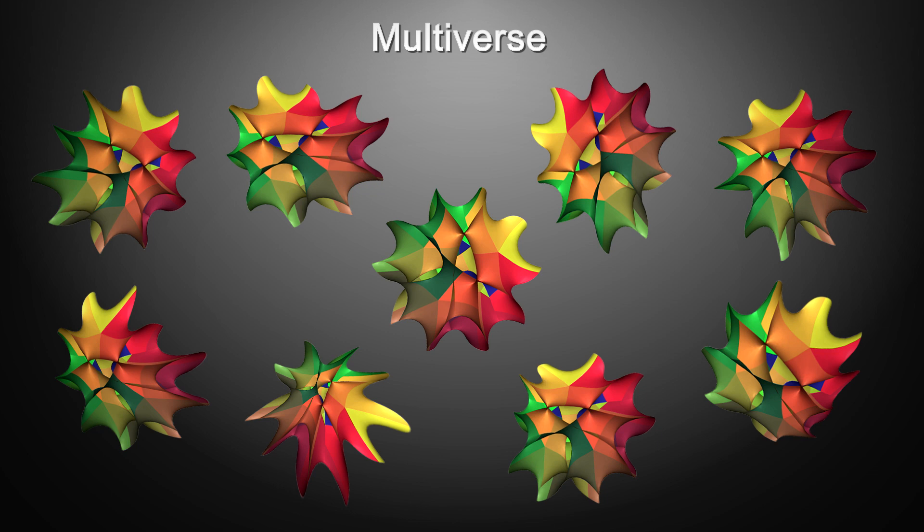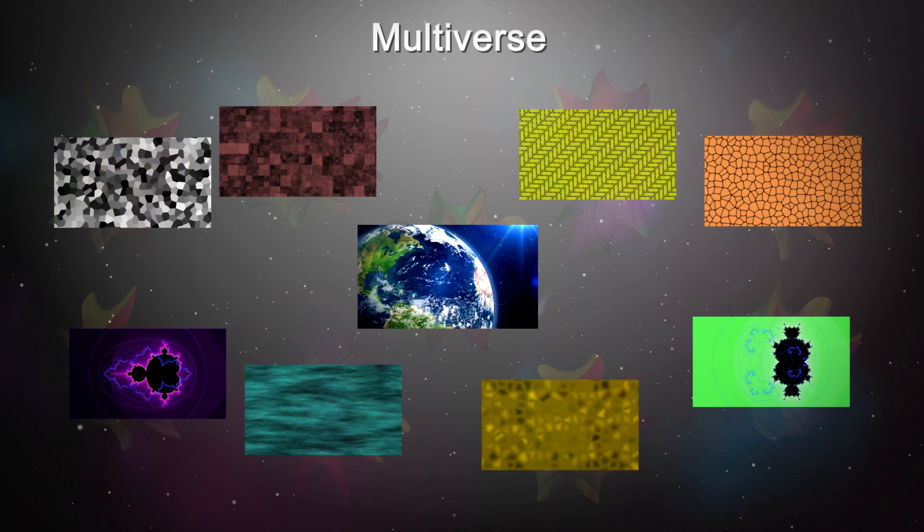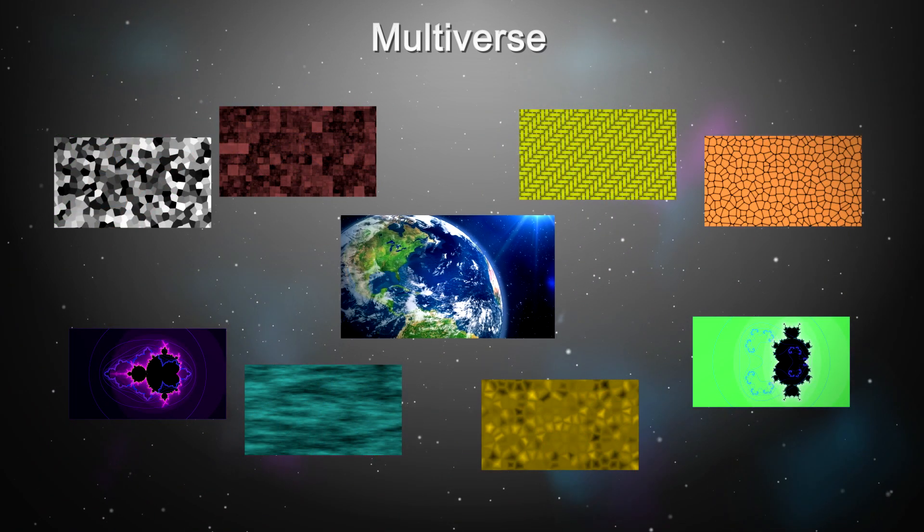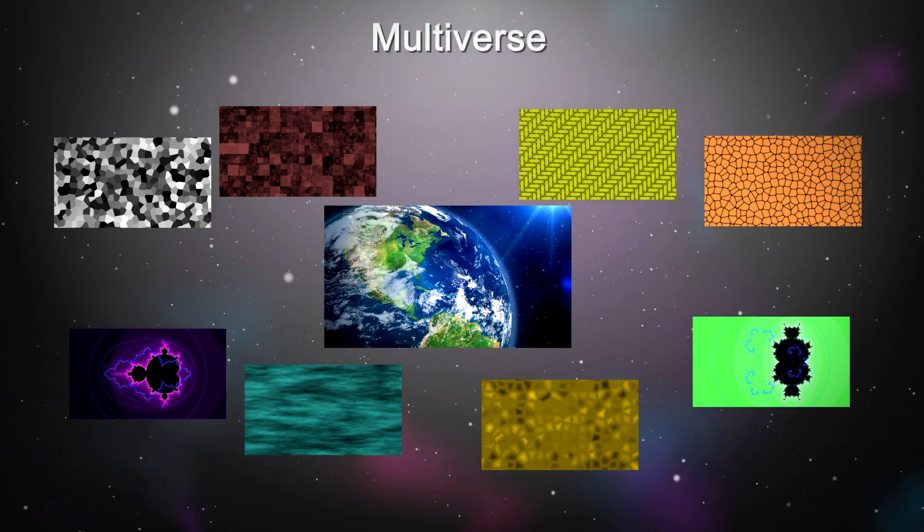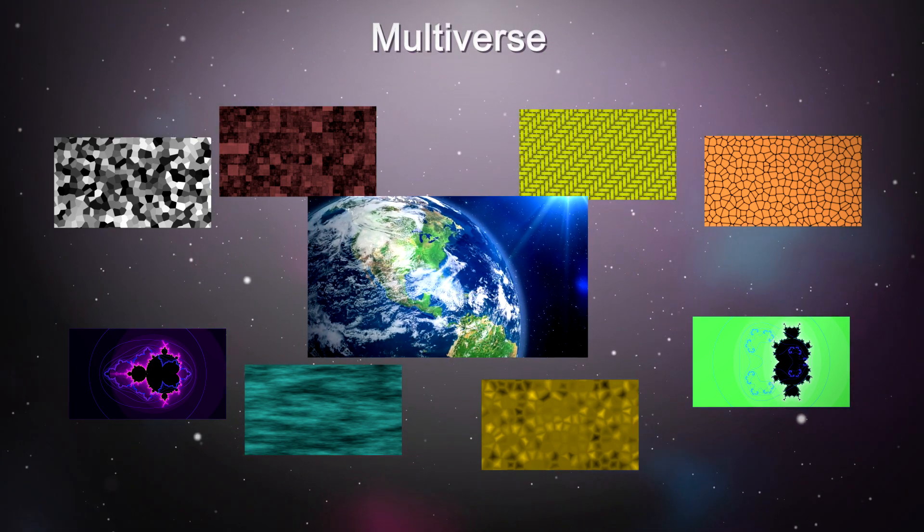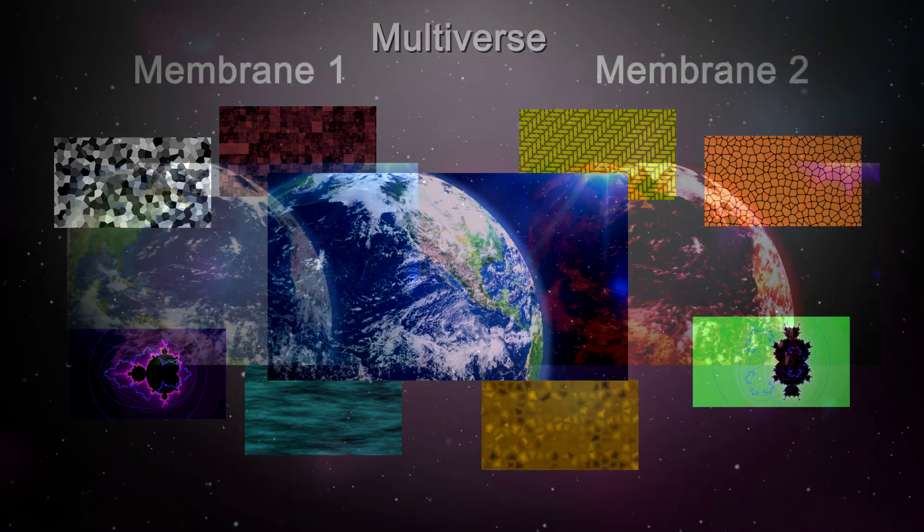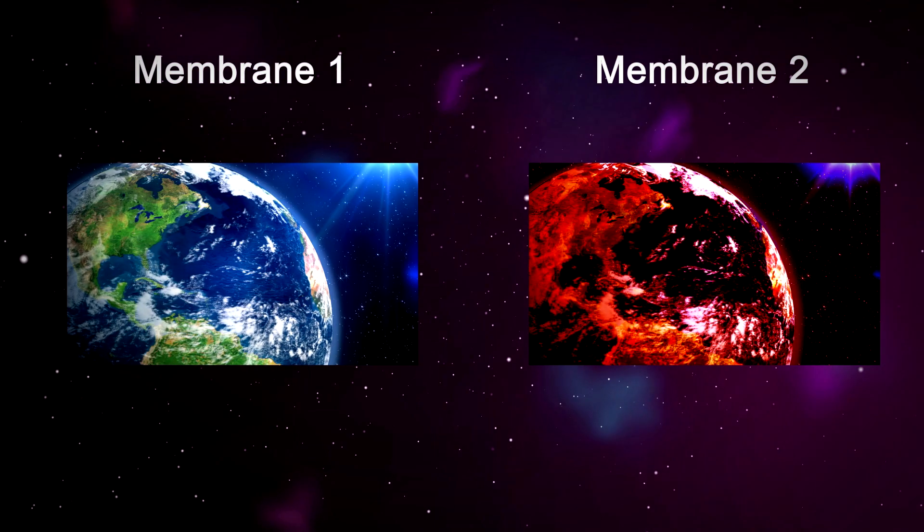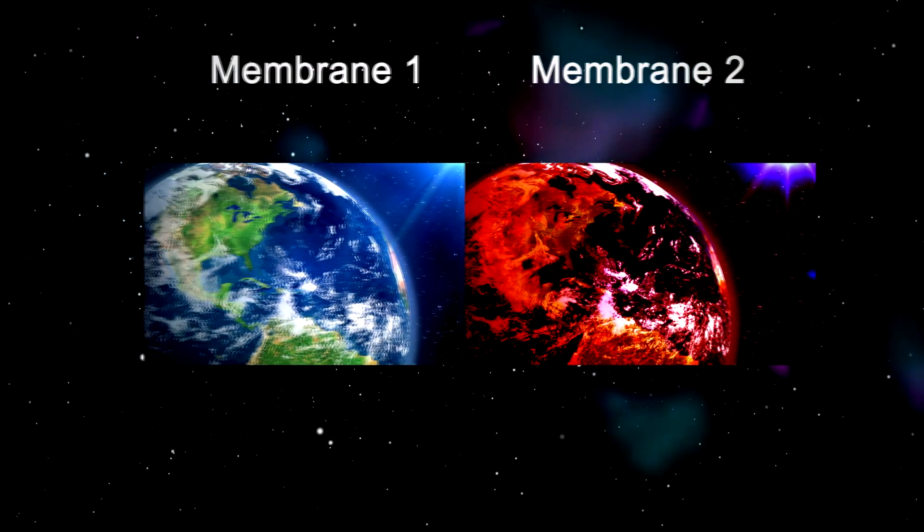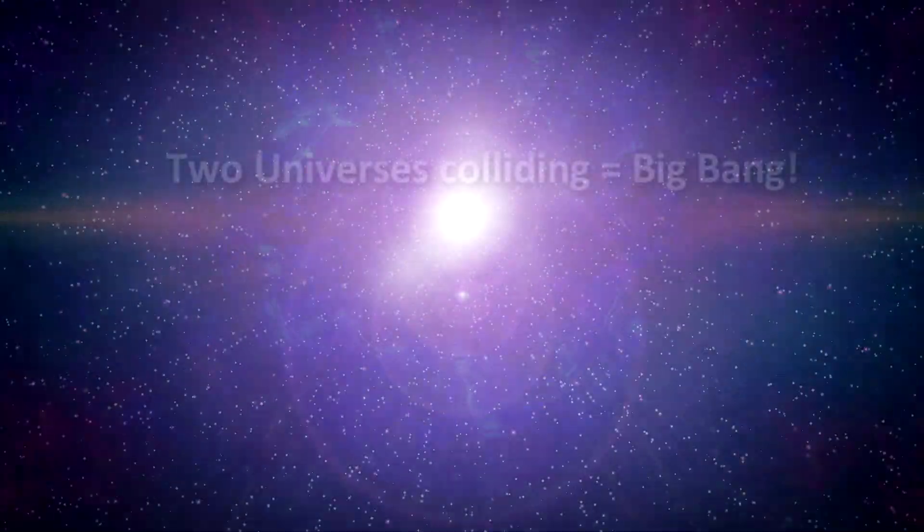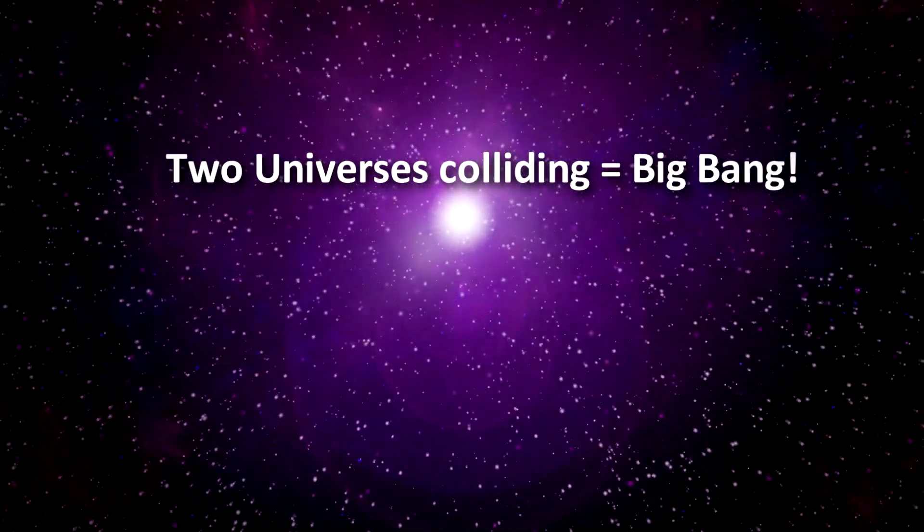This implies that we exist because if you have a near infinite number of universes with lots of different properties, then a universe like ours, where gravity can form planets and complex molecules can form life, is bound to exist. And if we are living in a membrane, then the mathematics shows that a collision with another membrane would have caused energy on a huge scale, which would look a lot like the Big Bang, which is of course what we observe.